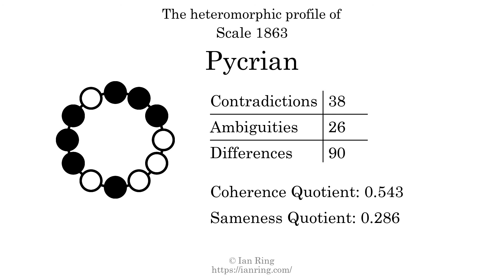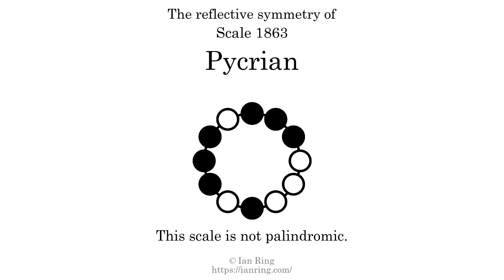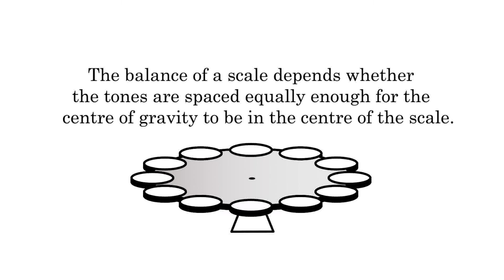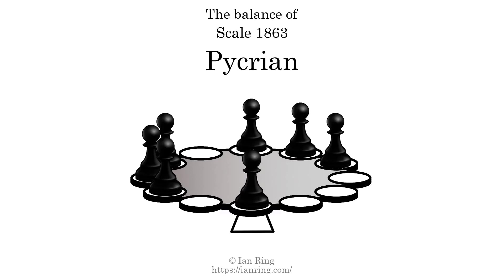This scale has no reflective symmetry. This scale has a different pattern of intervals ascending and descending, so it is not palindromic. This scale has no ridgetones. The balance of a scale depends on whether the tones are spaced equally enough for the center of gravity to be in the center of the scale. This scale is not balanced.